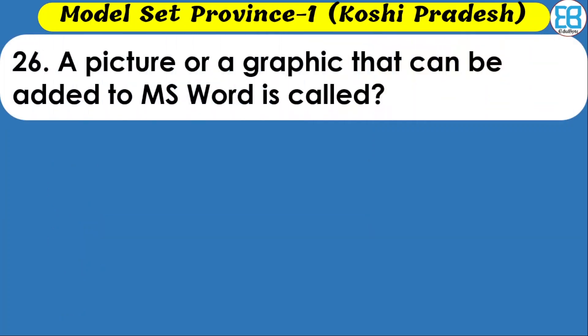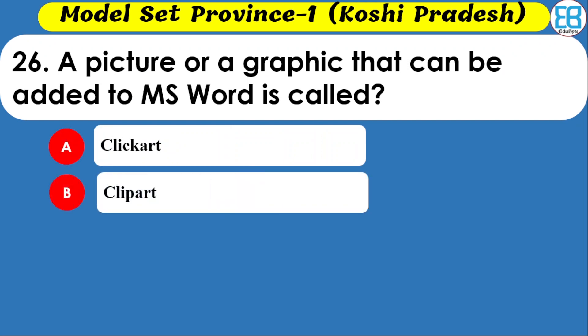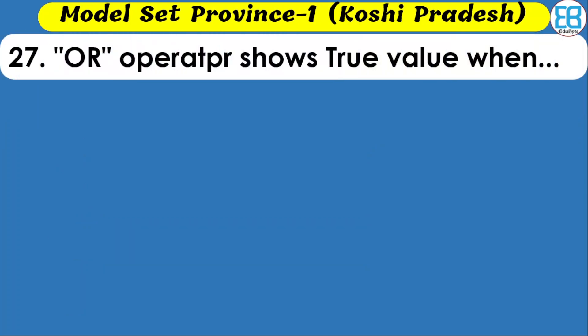A picture or graphic that can be added to MS Word is called what? Options are clip cut, clip art, click art, and cloud art. The correct option is clip art — a picture or graphic added to MS Word is called clip art.